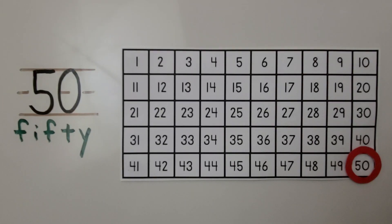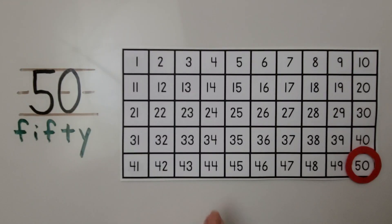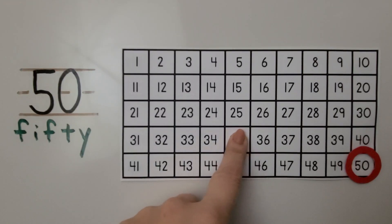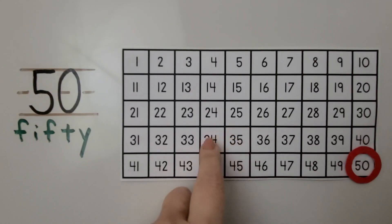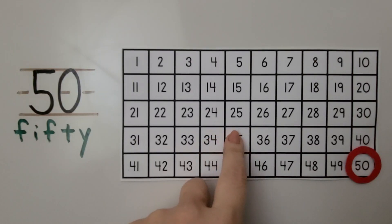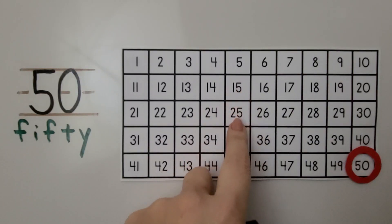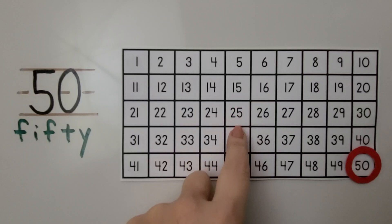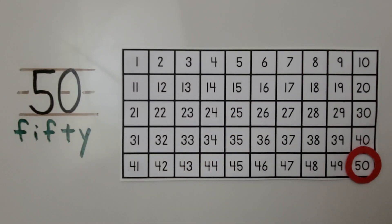By looking at what's happening in this 50 chart, it will help us to count. If a number was missing and it was empty, we would know that it should start with a 3. And from looking at the column, we know the 3 would be followed by a 5, because they all end in 5. And that is 35.